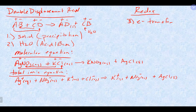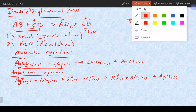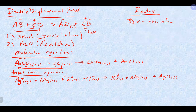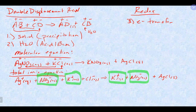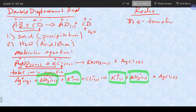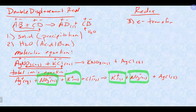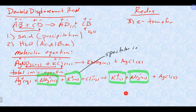When writing this equation, anything that is an ion needs to have a charge. Anything that is a solid, liquid, gas, or weak electrolyte you do not break apart. In this equation, we can find ions that look exactly the same on both sides — potassium and nitrate appear on both sides. Those are called spectator ions; they are present but not forming any product, just floating around in solution to balance the charge.